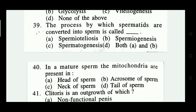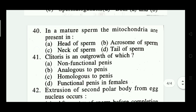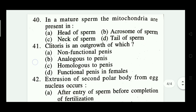Question number forty: in the mature sperm, the mitochondria are present in — head of sperm, acrosome of sperm, neck of sperm, tail of sperm. The right answer is neck of sperm — option C.